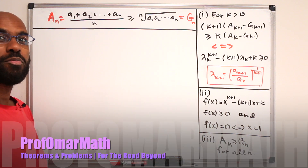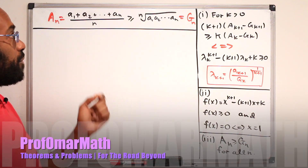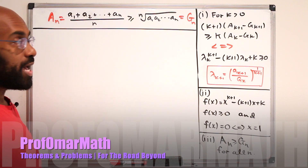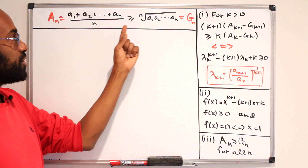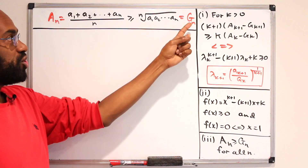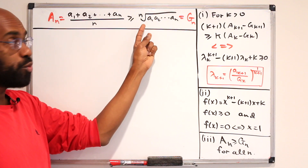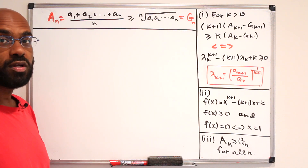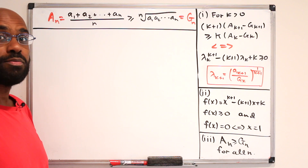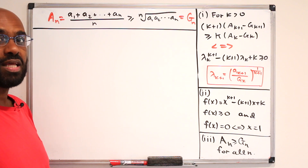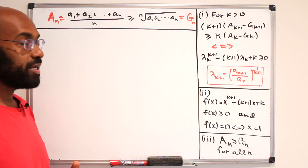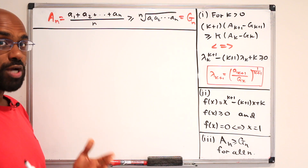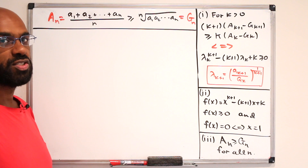In this video, we're going to prove the arithmetic-geometric mean inequality, which says that if you have a bunch of positive numbers a1 through an, then their arithmetic mean is greater than or equal to their geometric mean, which is the nth root of the product of the numbers. The proof we're going to follow is outlined in Cambridge Step 3 exam 2018 number 5. If you want to try this yourself, you can pause, and then we'll discuss the solution.